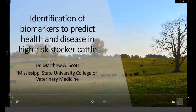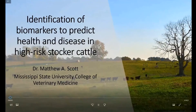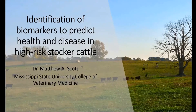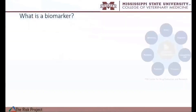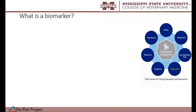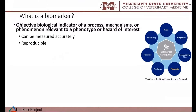I'm a soon-to-be Ph.D. at Mississippi State University. Today I'll be talking about the identification and use of biomarkers — specifically some of the research we're doing now to better predict health and disease outcomes related to bovine respiratory disease in high-risk stocker cattle. The first question we need to ask is: what is a biomarker? A biomarker, at least in my opinion, is an objective biological indicator of some form of process, mechanism, or phenomenon that's relevant to a phenotype, a disease, or a hazard of interest.